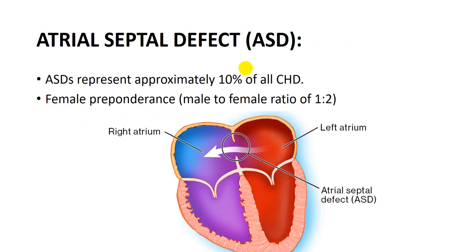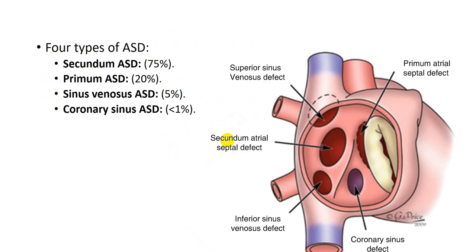Today we will start with the acyanotic group, and the first example is atrial septal defect. What is atrial septal defect? It is a defect present between the two atria in the interatrial septum. This is the left atrium, this is the right atrium, and this is the interatrial septum — which should be intact. In a patient with atrial septal defect, there is a defect in the interatrial septum. There is a female predominance of 2 to 1. There are four types of ASD depending on the location of the defect.